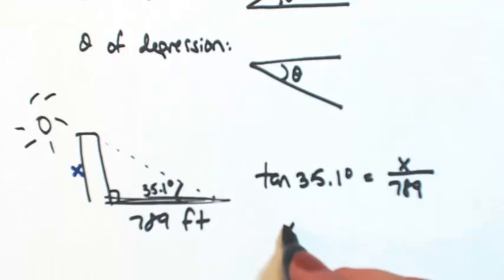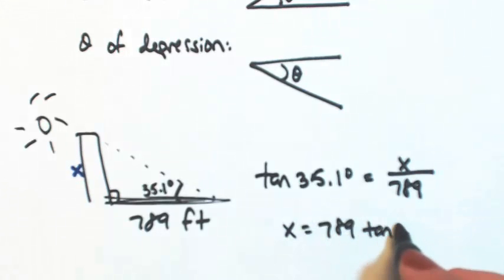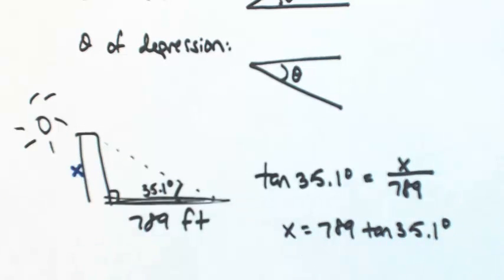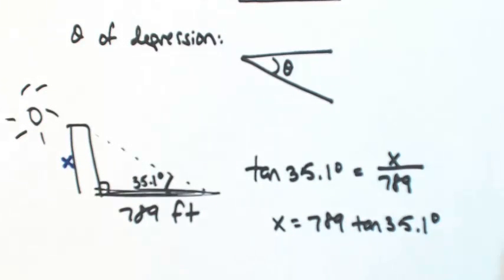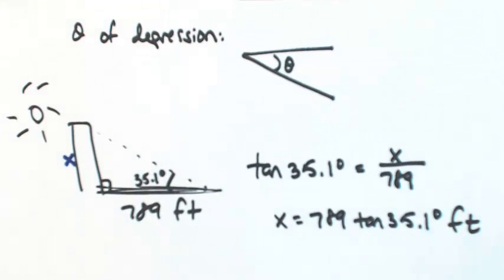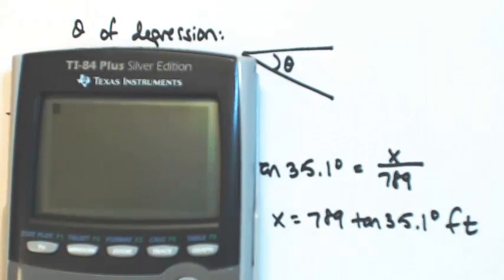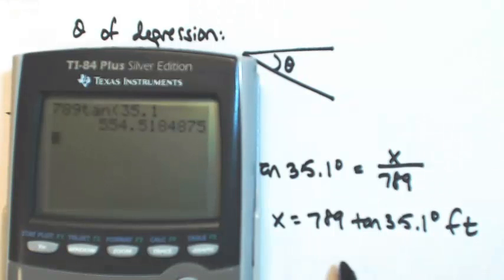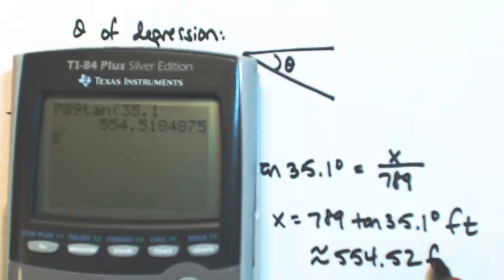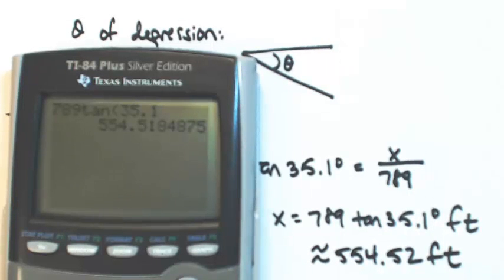So solving for x. And we had the shadow being in feet, so this would also be in feet. Now this is our exact answer. If you're looking for an approximation, we'll just go to the calculator. Make sure you've got degree mode. So 789 times the tangent of 35.1. Okay, so about 554.52 feet. That's okay.